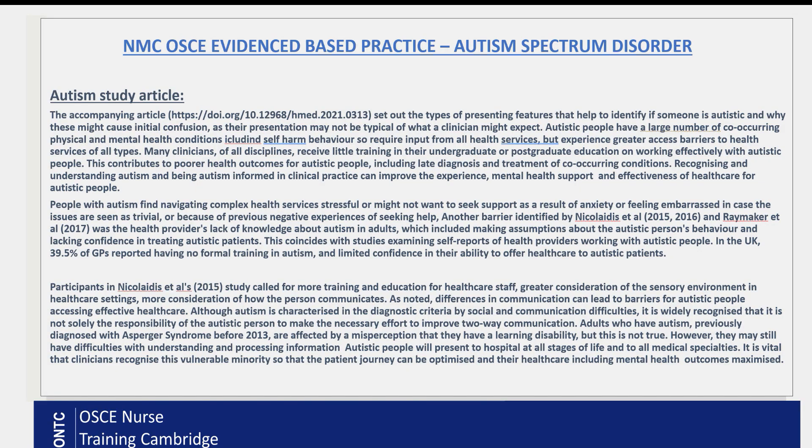Autism spectrum disorder, or ASD, is a lifelong condition. People can be diagnosed as children or even in adulthood, because sometimes it's not very obvious — sometimes it's very mild, sometimes quite severe. It can be diagnosed in adults who didn't receive the diagnosis earlier on, and it can be quite a struggle for people who have autism.